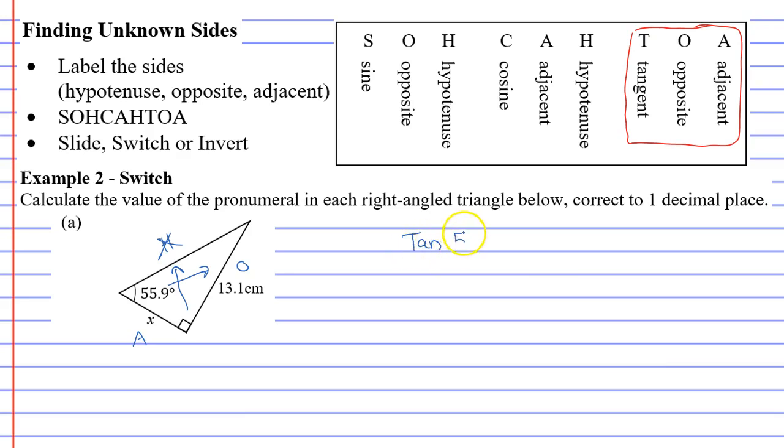And next to tan, we write that angle, 55.9 degrees. Equals, and then our vinculum bar for our fraction. What goes at the top and what goes at the bottom? Well, when we follow the order of T, O, A, O comes next. So it goes at the top and A comes second.